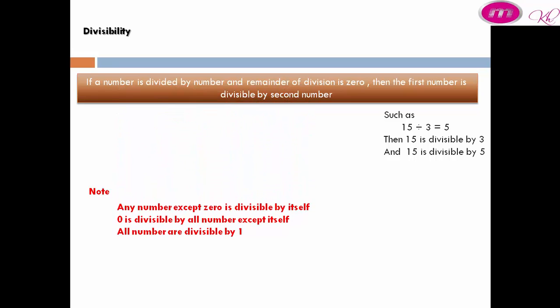Note: any number except zero is divisible by itself. Zero is divisible by all numbers except itself. All numbers are divisible by one.